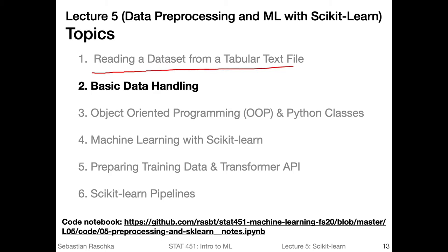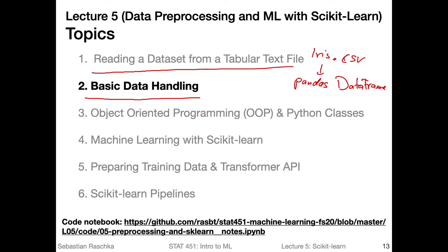In the previous video, we talked about reading in a dataset from a tabular text file. In particular, we worked with a CSV file — the iris dataset — reading it from a comma-separated value file into a pandas DataFrame. In this video, we are going to talk about how we can get the data into the right shape for machine learning with scikit-learn, using pandas and NumPy to get the data into the right format.